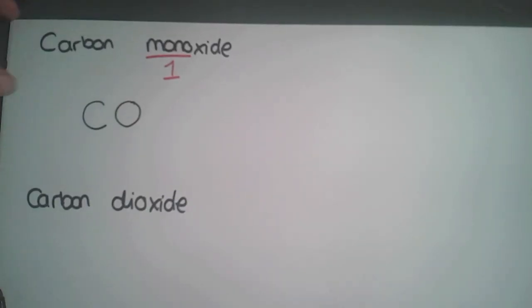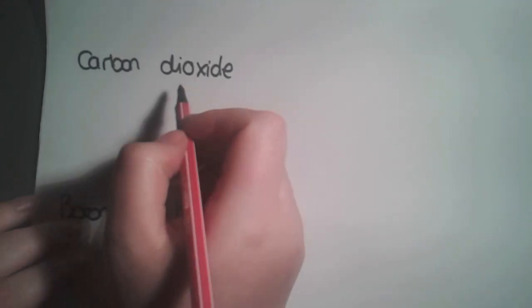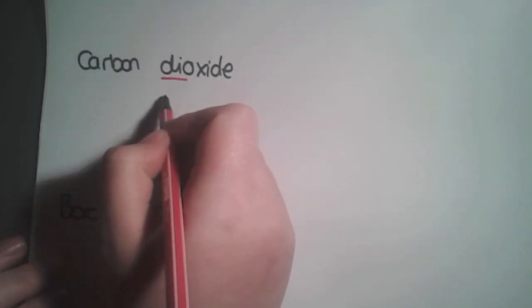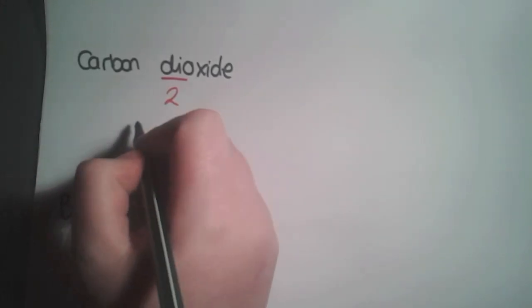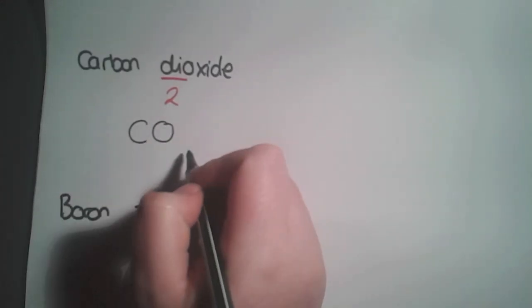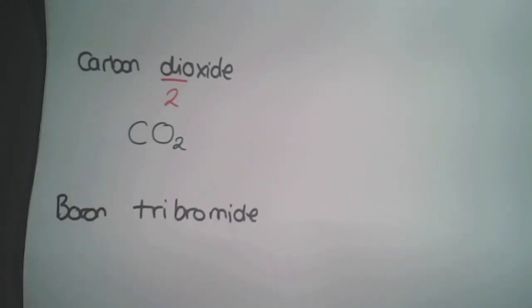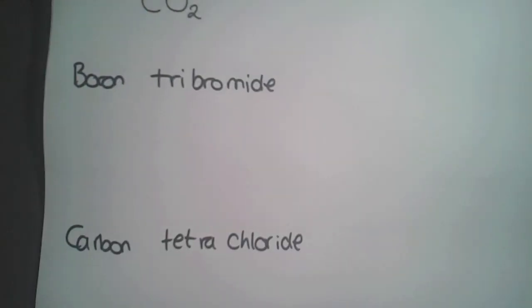Looking at the next example, we have carbon dioxide. Di is our prefix meaning two. So again you find the symbols C for carbon, O for oxygen, and this time you put a subscript 2 beside the oxygen to show that we have two of them.